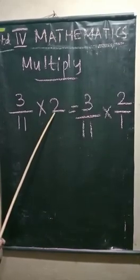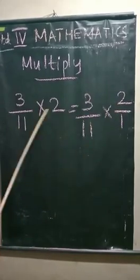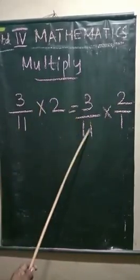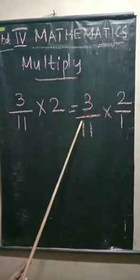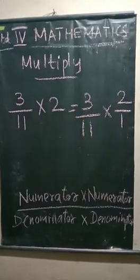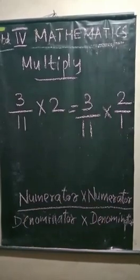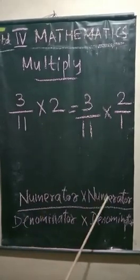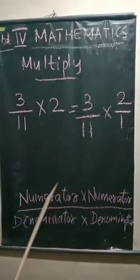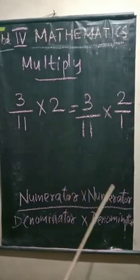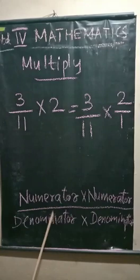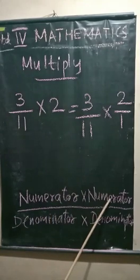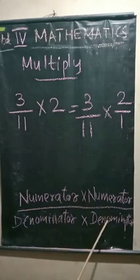What is the fractional form of 2? 2 by 1. So, 3 by 11 into 2 by 1. Now, the multiplication will be done. Multiply numerator into numerator, denominator into denominator. Numerator into numerator. Denominator into denominator.